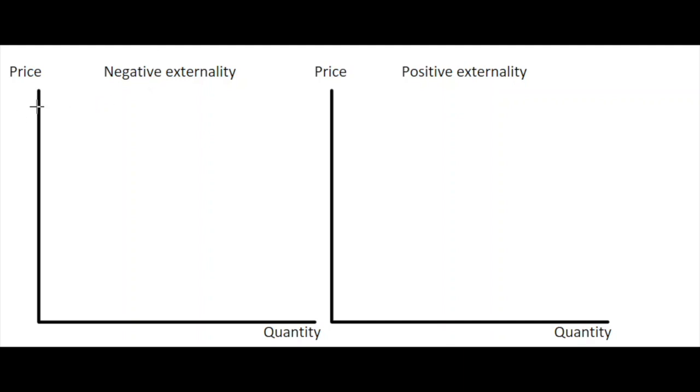We'll start with the negative externality and draw our downward sloping demand curve. In this case, we're going to call that the marginal private benefit curve, which is still a demand curve but just a different way of looking at it. We also have our supply curve, normally upward sloping like this, but we'll call it the marginal private cost curve.